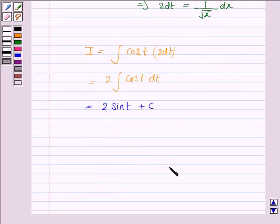Let's now substitute the value of t. So this becomes 2sin(√x) + C.